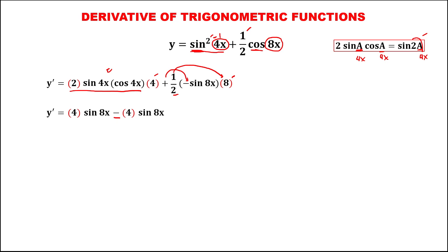Observe that we have four sine eight x minus four sine eight x, so therefore the derivative is equal to zero.